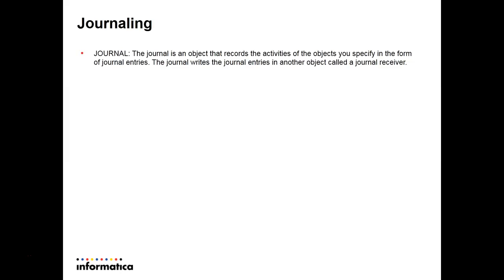Now, journaling. The journal is an object that records the activities of the objects you specify, in the form of journal entries. For example, we have some tables as journal entries in the journal. The journal writes those journal entries into another object called the journal receiver.